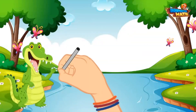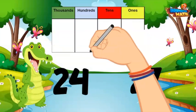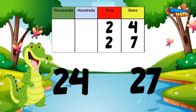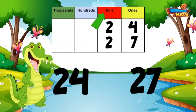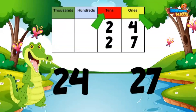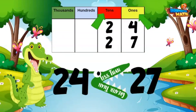Let's compare the numbers 24 and 27. I can use a place value chart to help. 24 has two tens and four ones. 27 has two tens and seven ones. When comparing numbers, I look at the largest place value first — that's the tens place. I can see that both numbers have a 2 in the tens place, so I need to move to the ones place. 4 ones is less than 7 ones, so 24 is less than 27. I will use the less than sign. That alligator mouth wants to eat the 27 because it is greater.